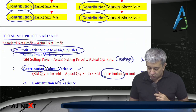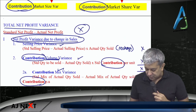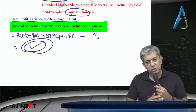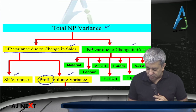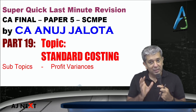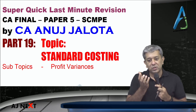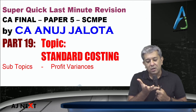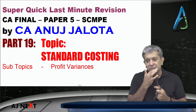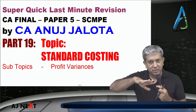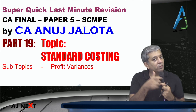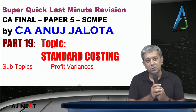Once this is done, your total net profit variance will tally with net profit variance due to change in sales, plus net profit variance due to change in cost. This exhausts this particular part. Everything up to profit is now done. In the next lecture — an important one — we will study: what is the relationship between variable and fixed overheads, what is the relationship between labor efficiency variance, and what is the relationship between profit variances and sales variances?